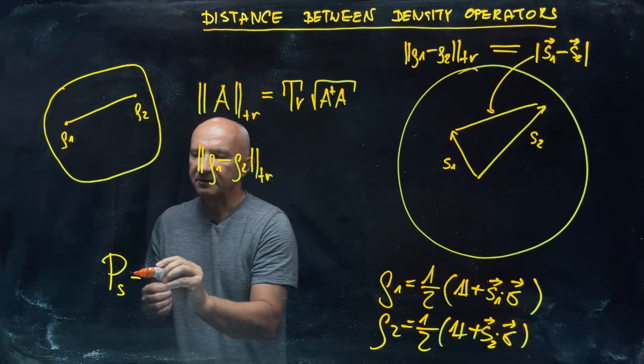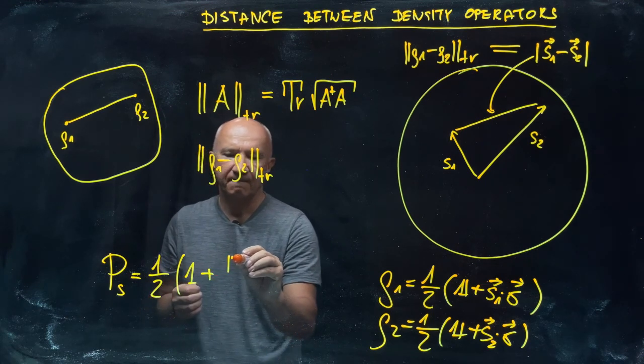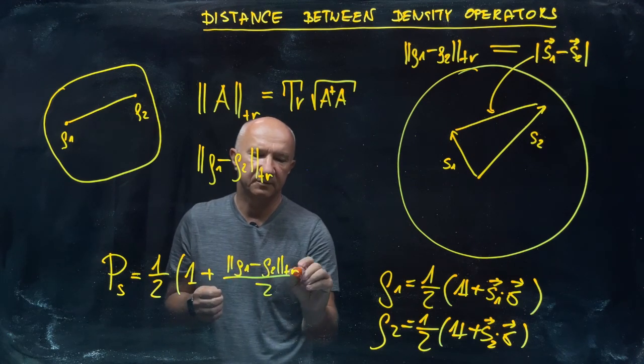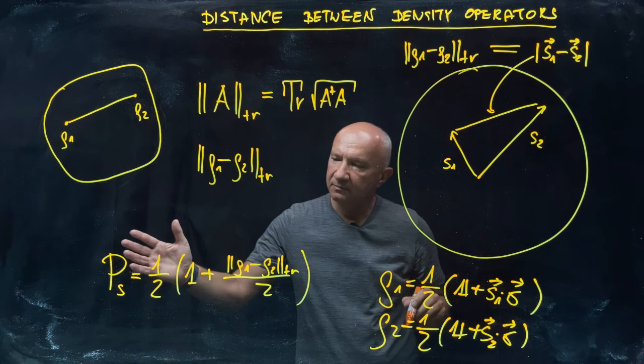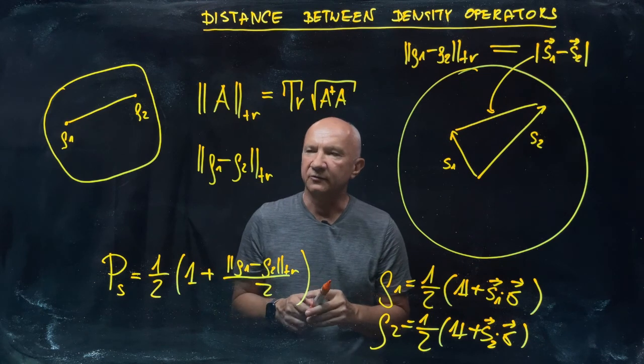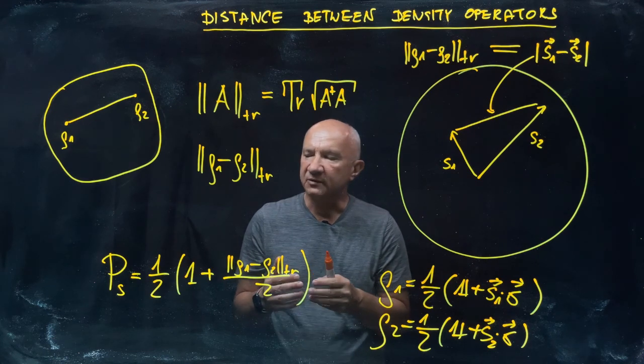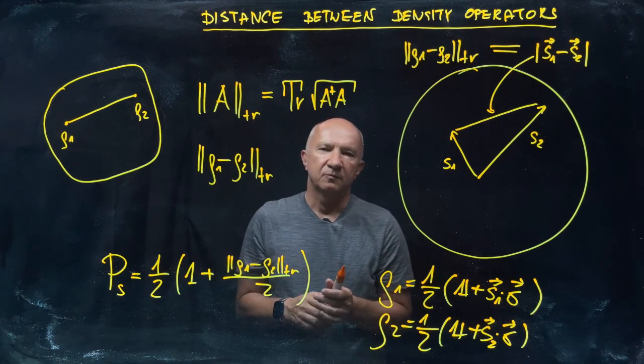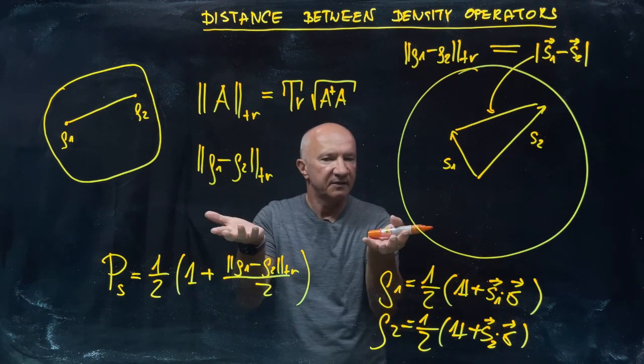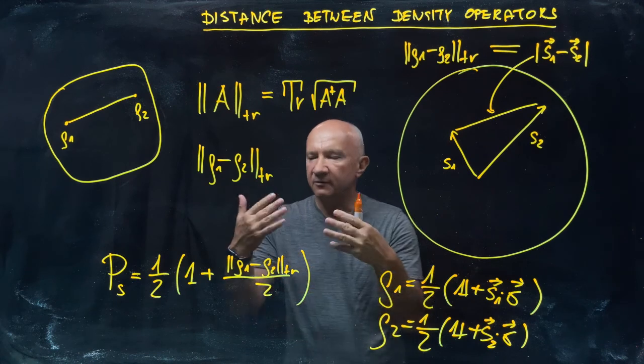The best you can do, depending on what ρ₁ and ρ₂ are, but in general you cannot distinguish those states perfectly. The trace distance tells us that the best you can do, your probability of success, is (1/2)(1 + ||ρ₁ - ρ₂||tr/2).